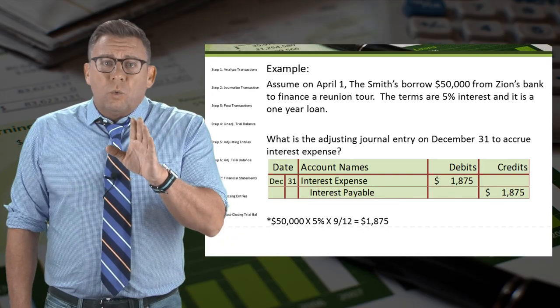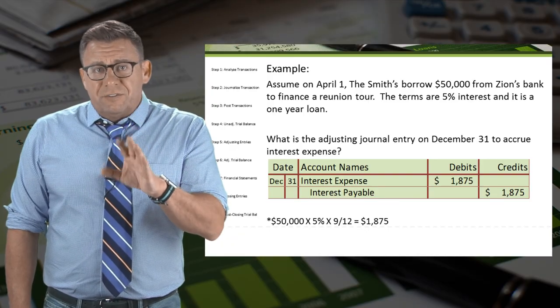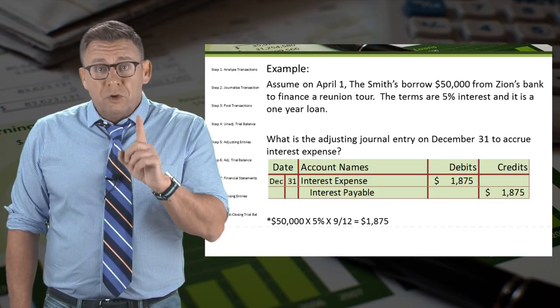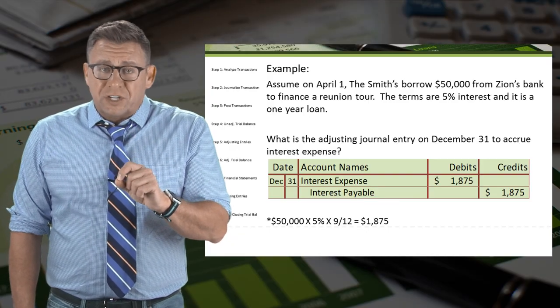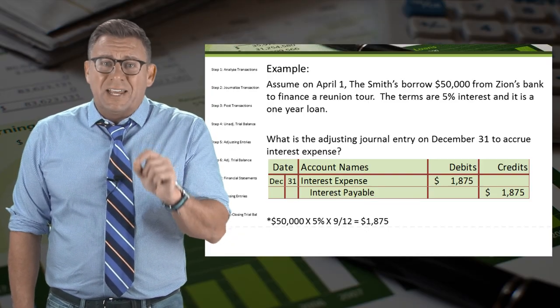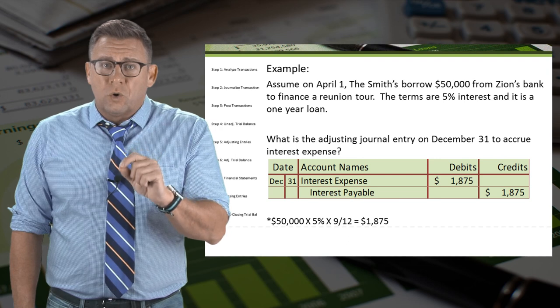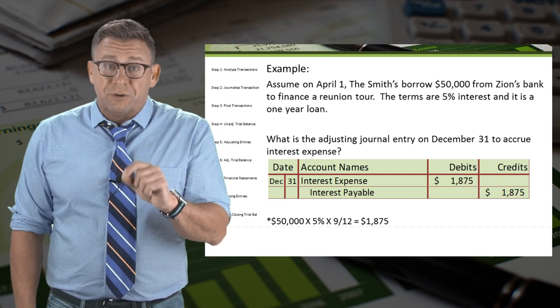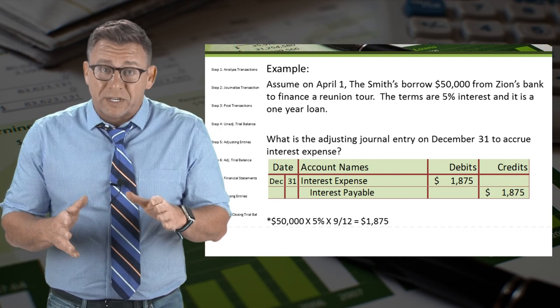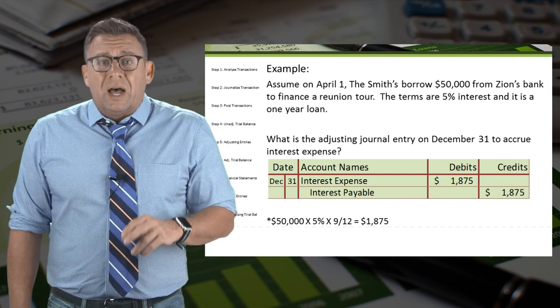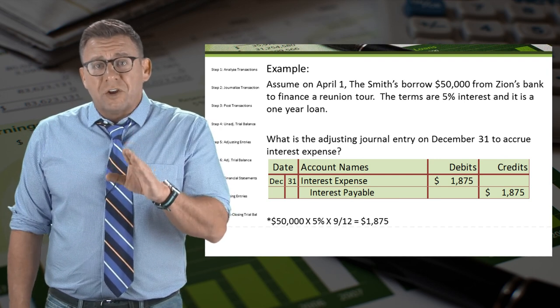If you're not watching these videos in order, you might be interested in how Zions Bank would record the adjusting entry from their perspective. I'd encourage you to watch the video for accrued revenue.